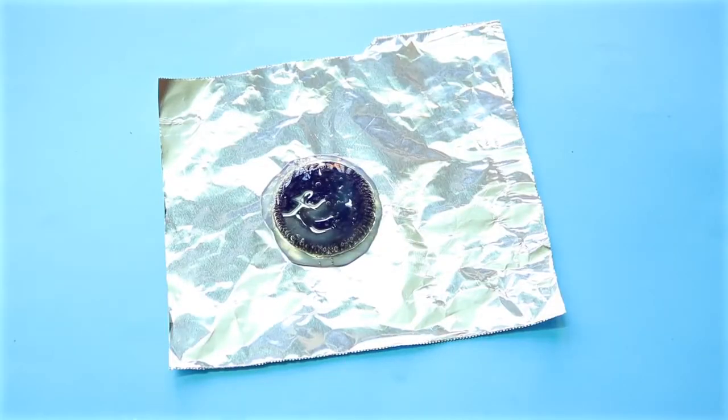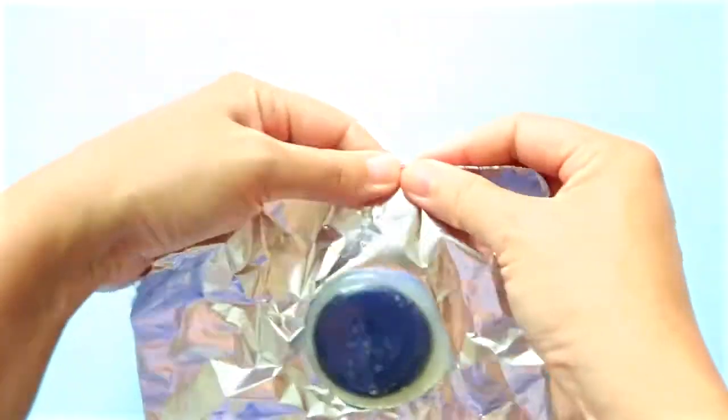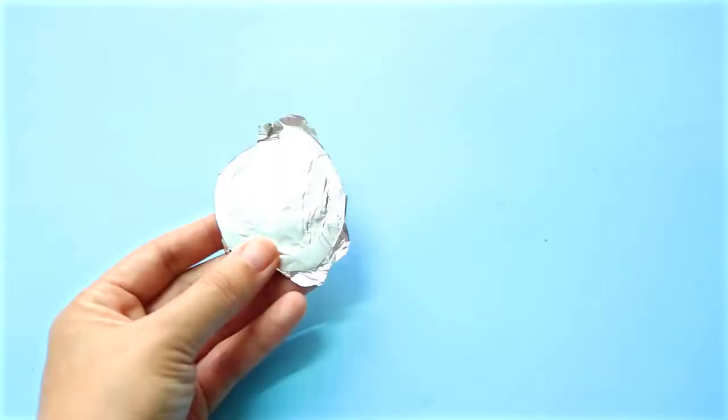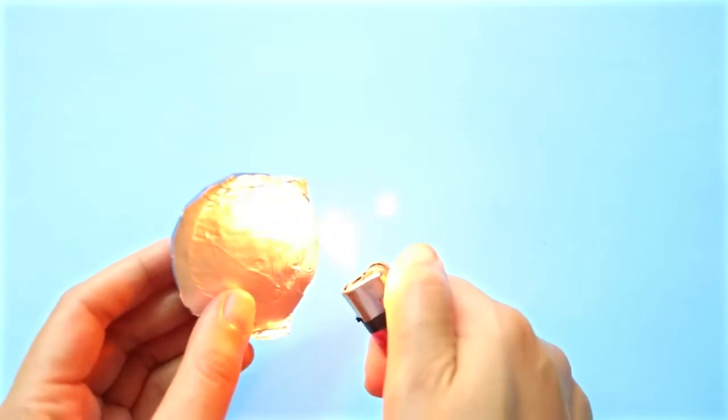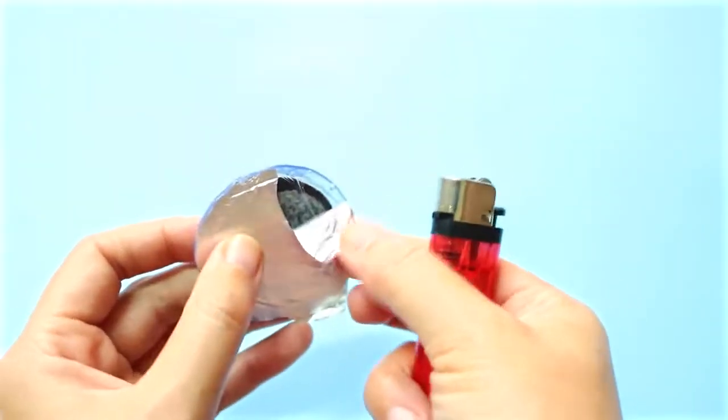Wait about 10 minutes for the glue to cool and dry, and then try to remove as much aluminum foil as you can. What I like to do is use a lighter to heat up the glue around the edge a little for easier removal.